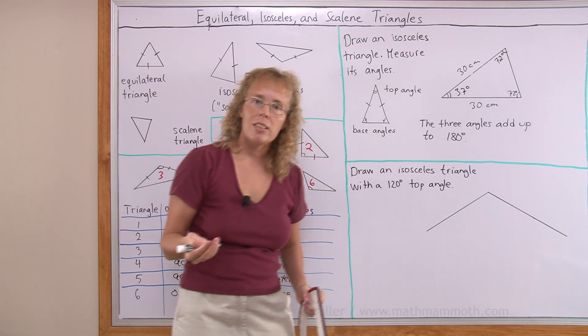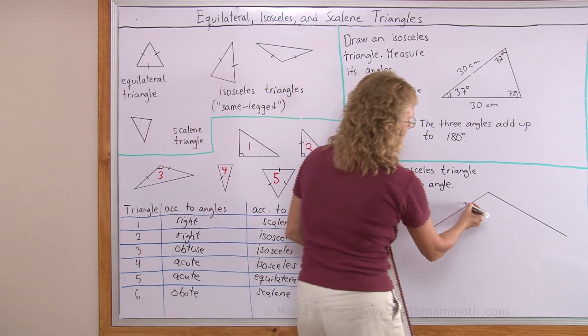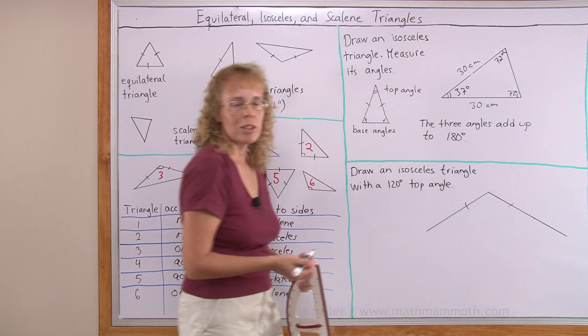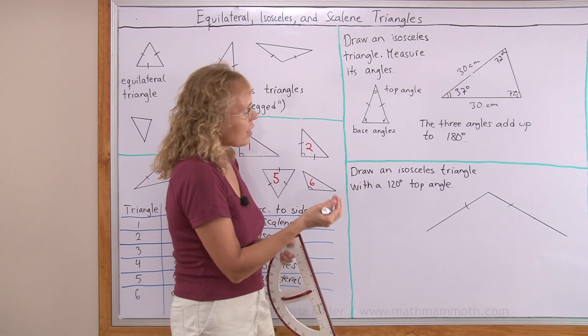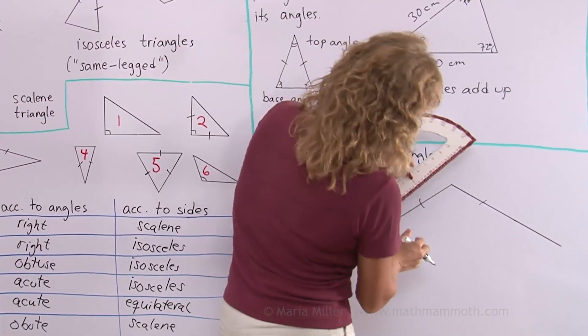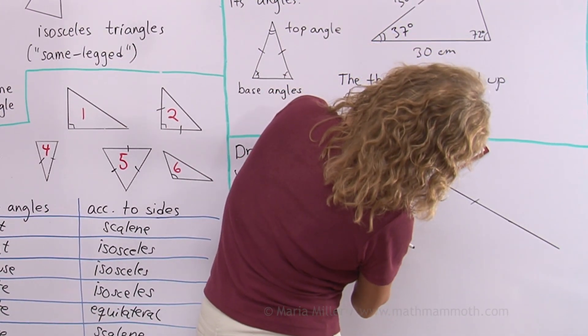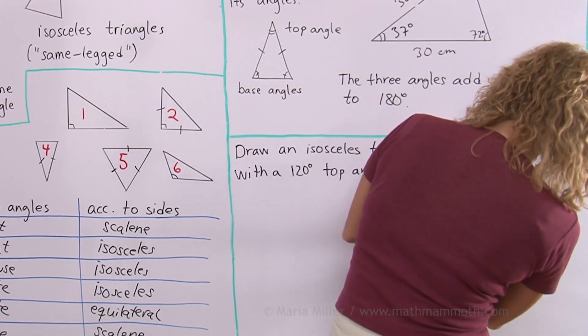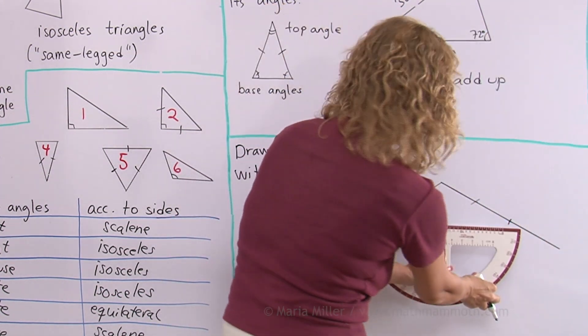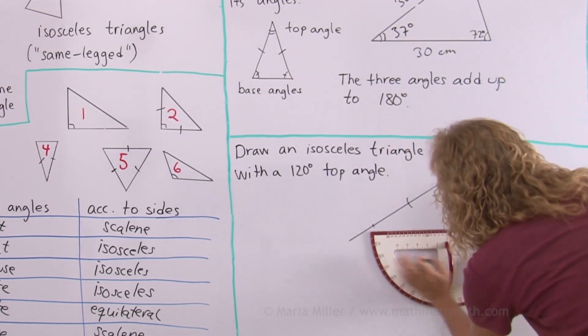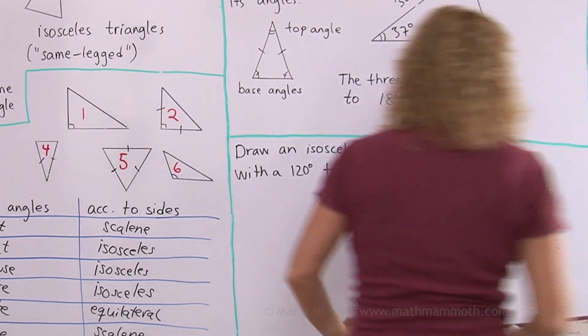And now to make it an isosceles triangle I need to make sure that this and this sides will be congruent. So I need to choose again a side length. Some number. Maybe we'll make it 20 centimeters this time. And now draw in the third side.